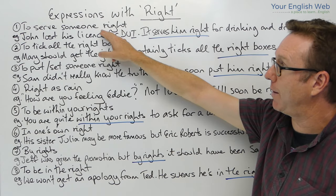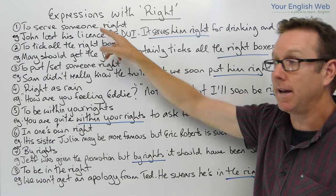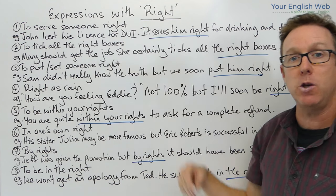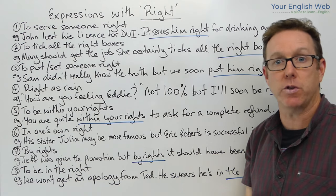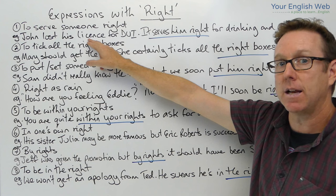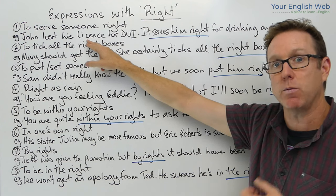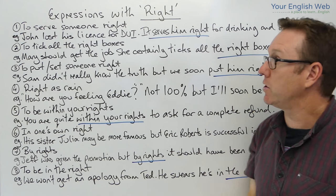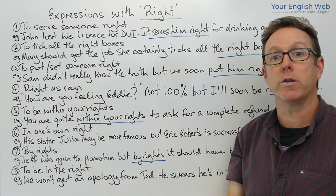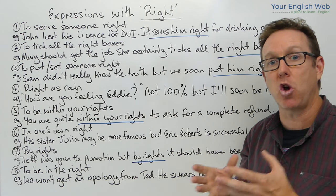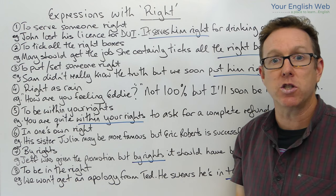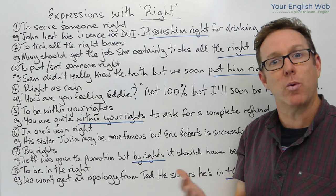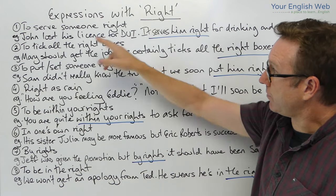The first expression is 'to serve someone right'. Looking at the example sentence: John lost his license for DUI — driving under the influence of alcohol — so he was drunk driving. It serves him right for drinking and driving. If you use this expression, it means that you think that person got the punishment they deserved for what they did.